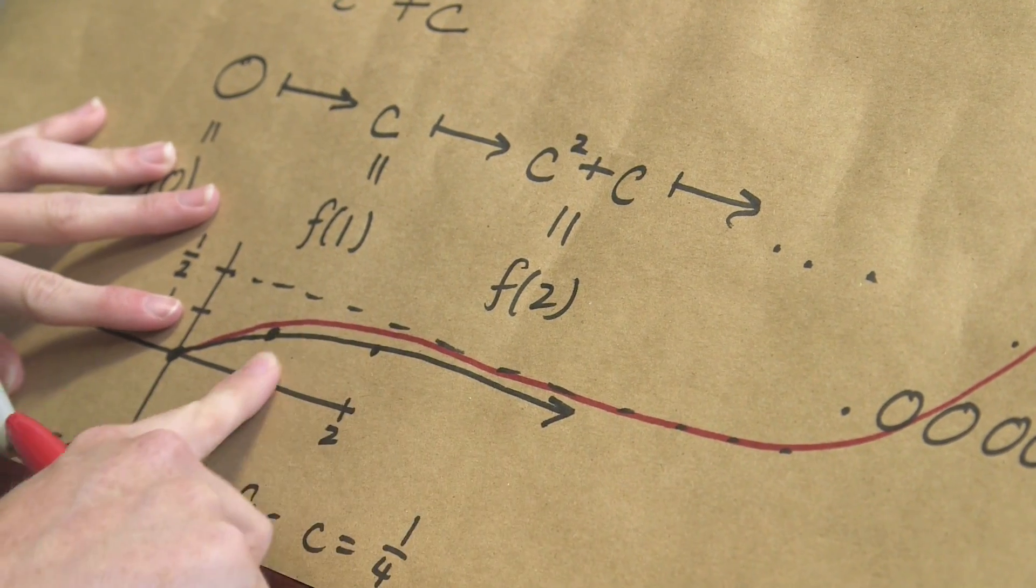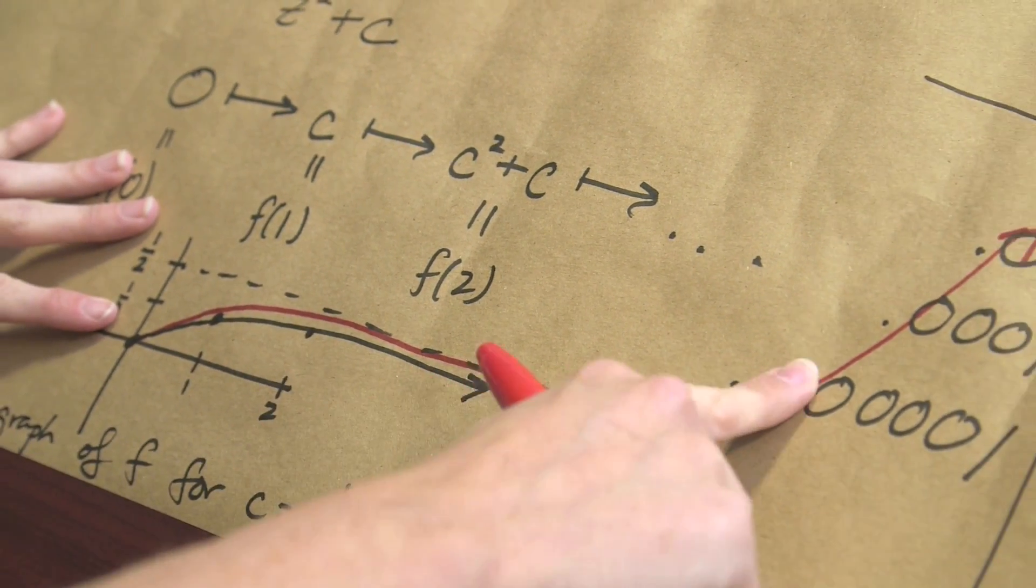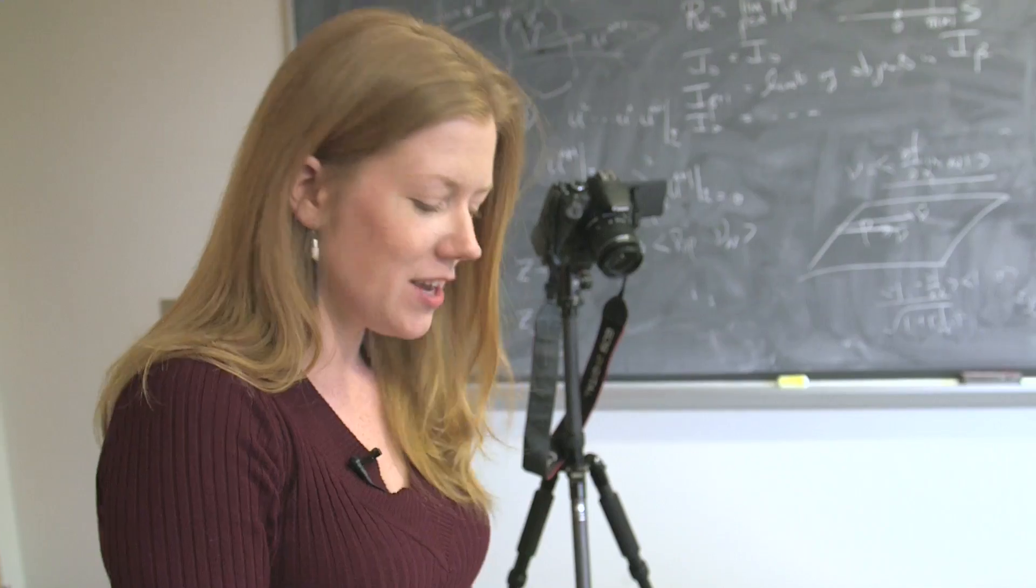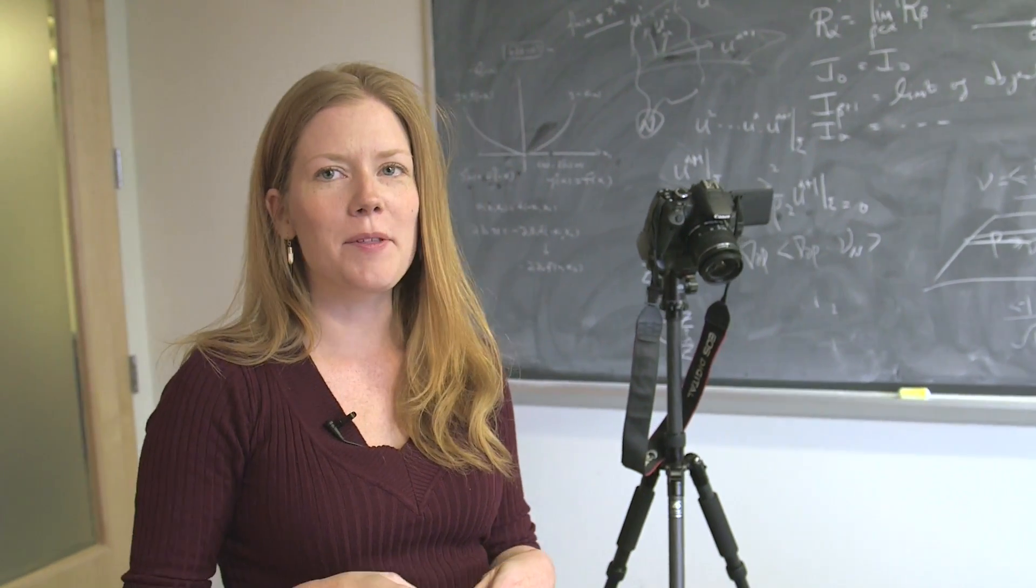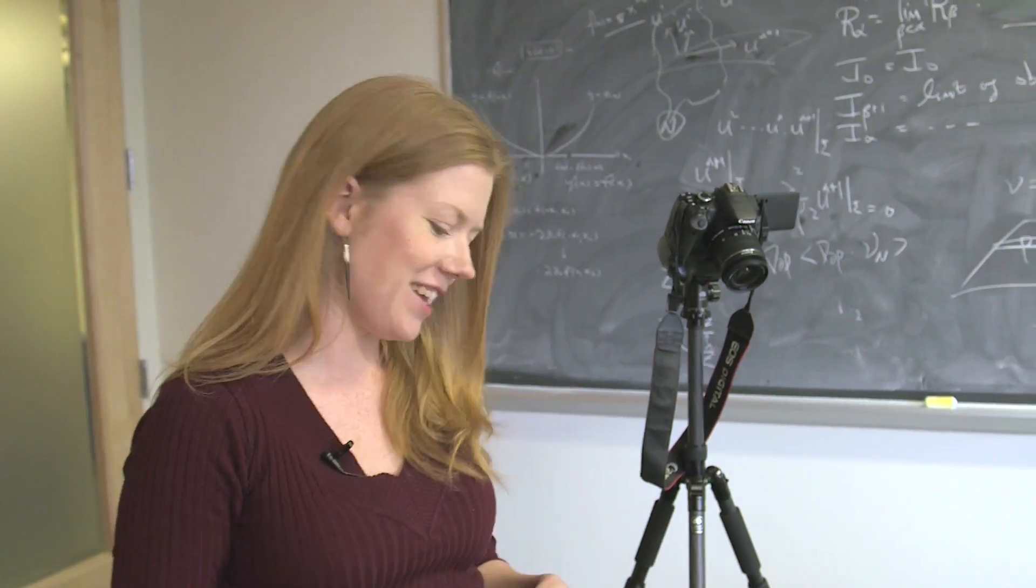The reason why you see pi here is because the portion of this graph, so this graph here for c slightly larger than 1 quarter looks just like—and you can make this precise—looks just like the graph for the tangent function. And so you have this trig function happening, and I think at least you believe that pi occurs with trigonometry, so that's why.